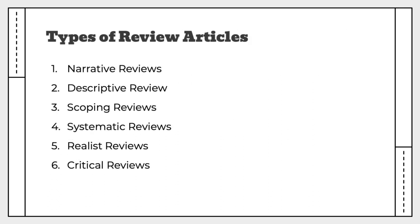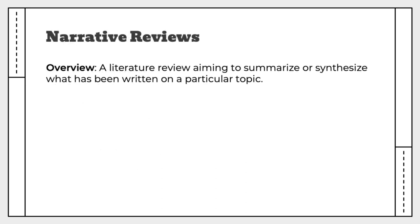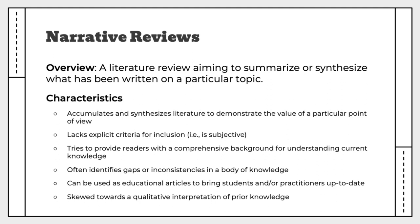There are a number of different types of review articles: narrative reviews, descriptive reviews, scoping reviews, systematic reviews, realist reviews, and critical reviews. A narrative review aims to summarize or synthesize what has been written on a particular topic. Narrative reviews tend to accumulate and synthesize literature to demonstrate the value of a particular point of view — in other words, they're subjective and try to provide readers with a comprehensive background on a topic. They often identify gaps or inconsistencies, can be used as educational articles, and tend to be skewed more towards qualitative interpretation.